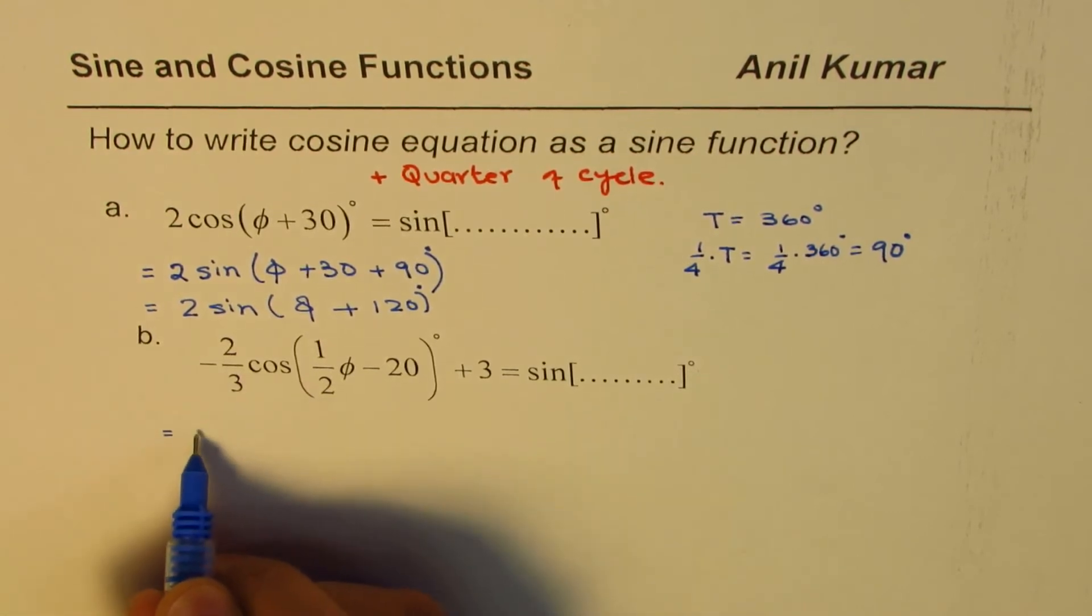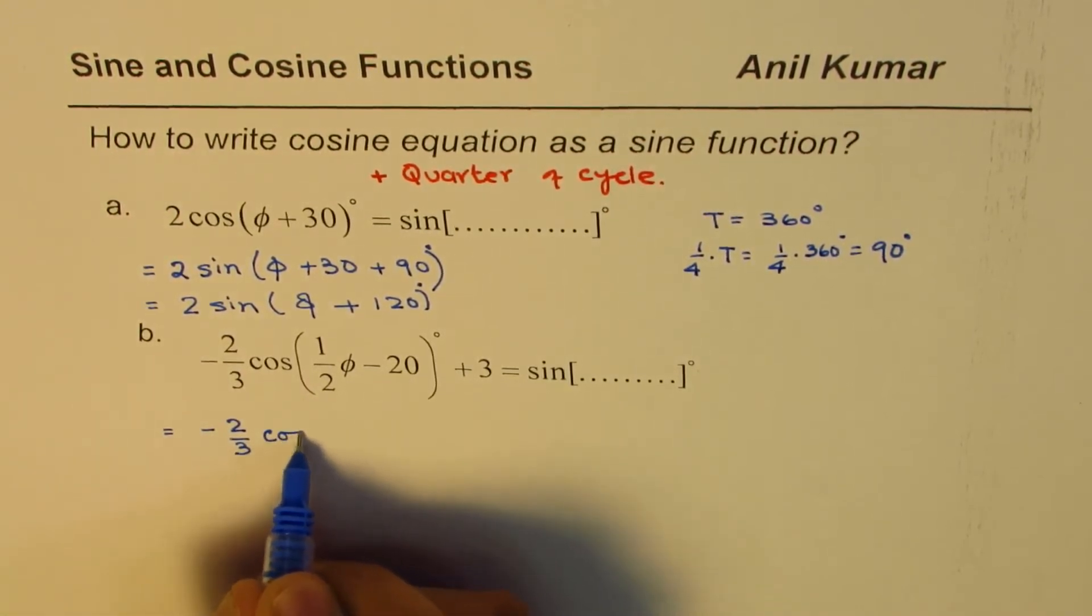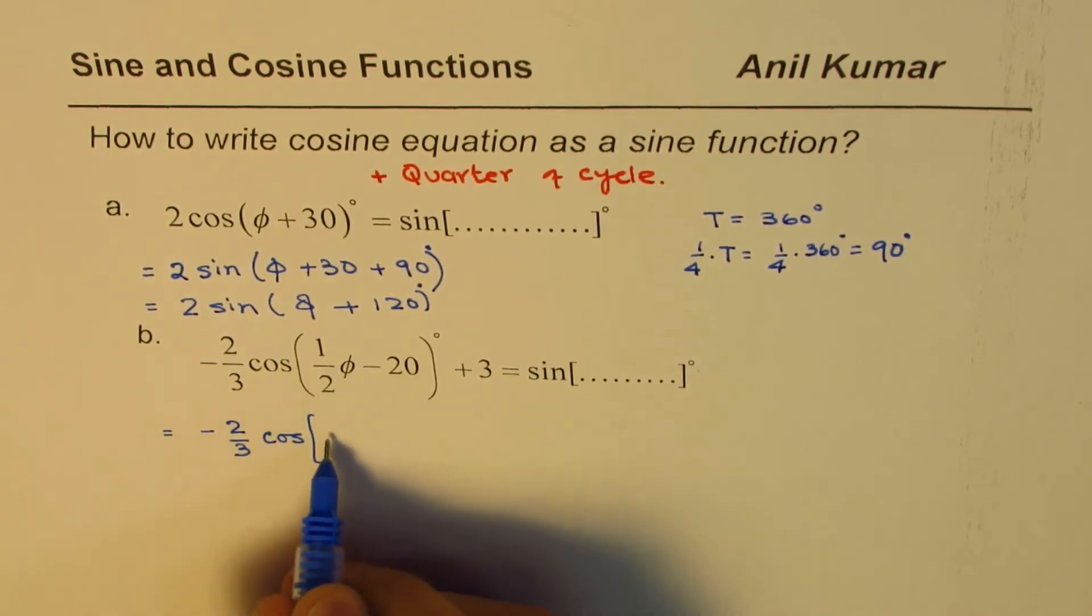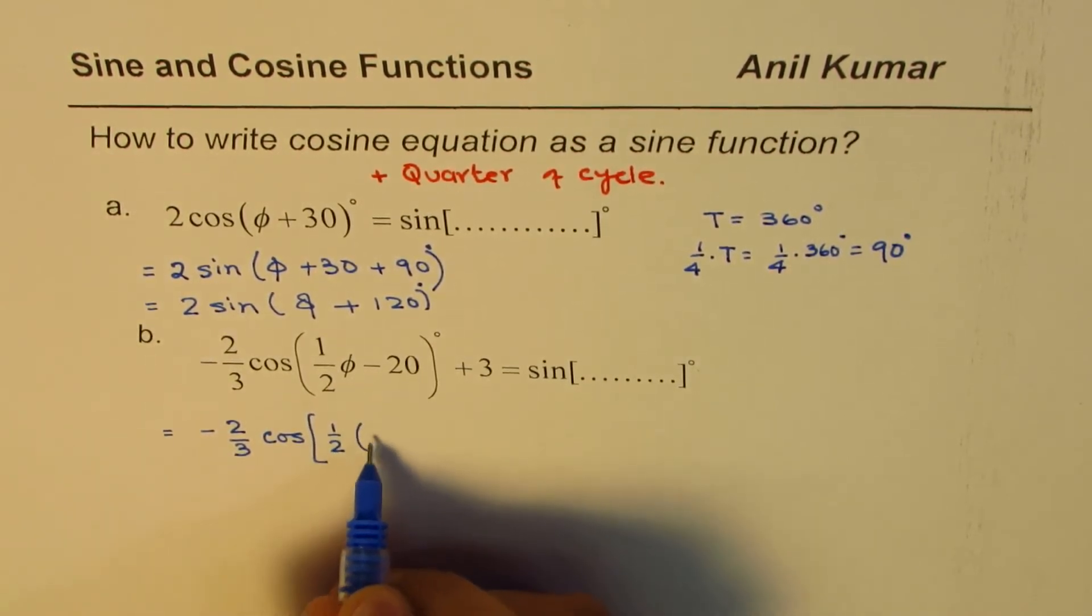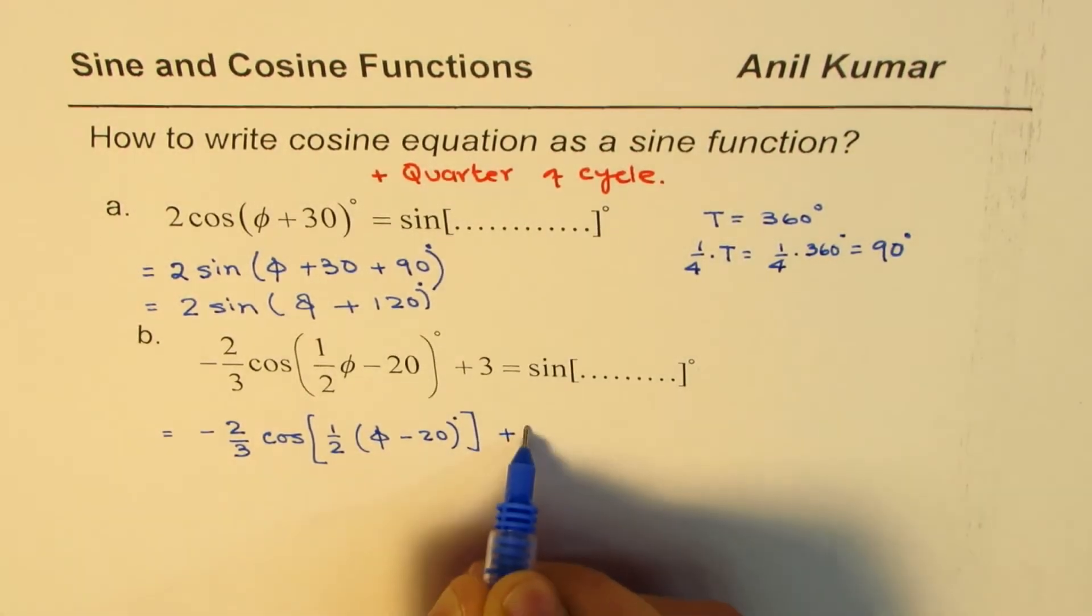Let me rewrite the cosine equation as -2/3 cos. Let's take this half common. So we get φ minus 20 plus 3.